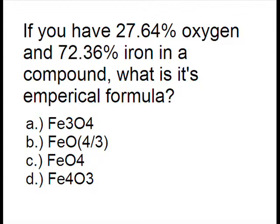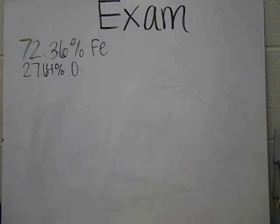Our second example is going to be more chemistry-related. The question is, if you have a compound that has 72.36% iron and 27.64% oxygen, find the empirical formula. We're going to do this problem. What we're going to do is we're going to assume that the whole compound weighs 100 grams. So this way, the percentages will just turn into grams.